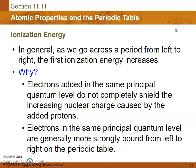In general, as we go across a period from left to right, the first ionization energy increases. Why is that? Well, electrons added in the same principal quantum level do not completely shield the increasing nuclear charge caused by the added protons. Electrons in the same principal quantum level are generally more strongly bound from left to right on the periodic table.